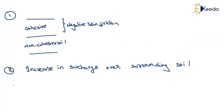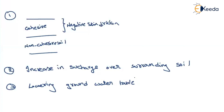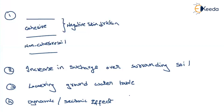A third case is any decrease in the groundwater table, also called lowering of the groundwater table. As you decrease the groundwater table level, the effective stress increases, causing the soil to get compacted, which again causes negative skin friction. A fourth case is because of dynamic or seismic effects. In all these cases, negative skin friction will develop.